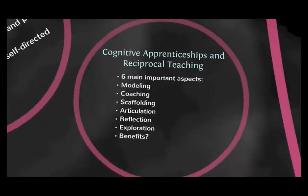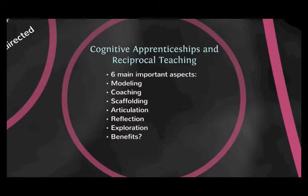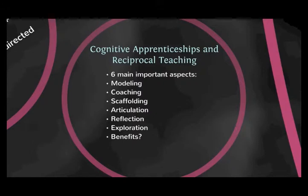Another constructivist approach is cognitive apprenticeships. In this model, there are six main aspects: modeling, where students observe an expert; students then receive support through coaching or tutoring; students receive conceptual scaffolding and articulate their knowledge; they then reflect on their progress and explore new ways to apply their learning. Benefits include that it facilitates higher-order reasoning, encourages greater levels of retention, and encourages authentic activity.